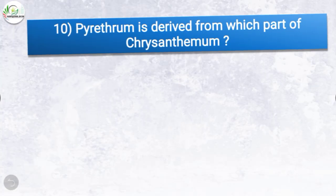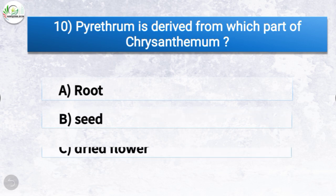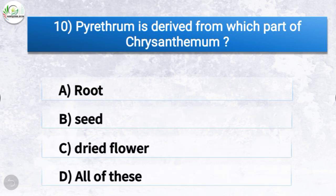Question number ten: pyrethrum is derived from which part of chrysanthemum? The options are root, seed, dried flower, or all of these. The correct answer is option C, dried flower. So pyrethrum is derived from the dried flower part of chrysanthemum.